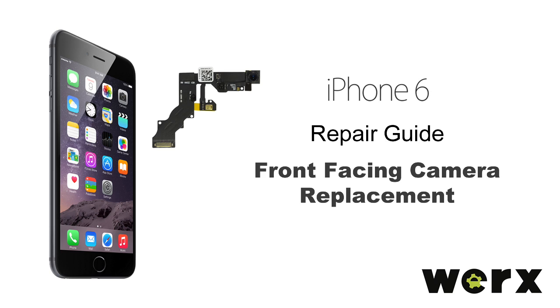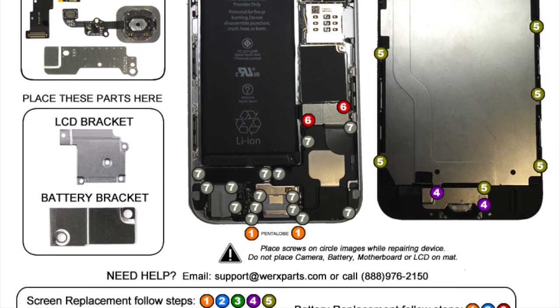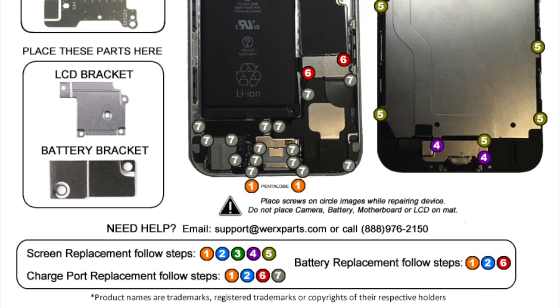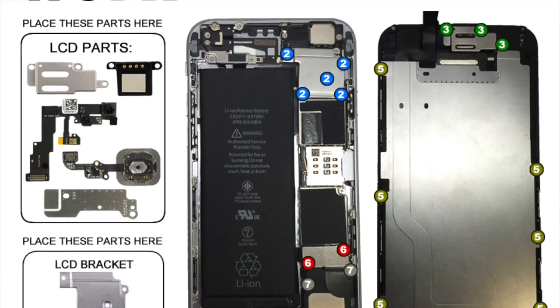Today, we will be replacing the front-facing camera and sensors on an iPhone 6. Be sure to use the WORX repair mat to keep all screws organized. Some screws have the same size but different lengths and can be easily misidentified during reassembly.